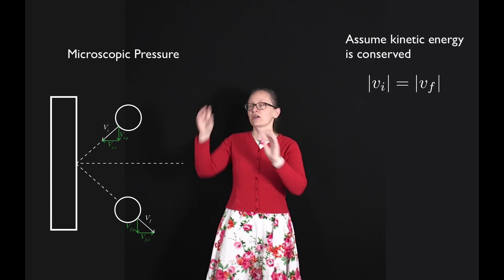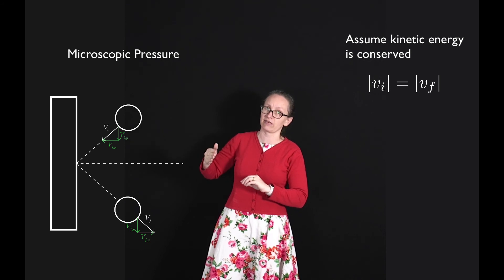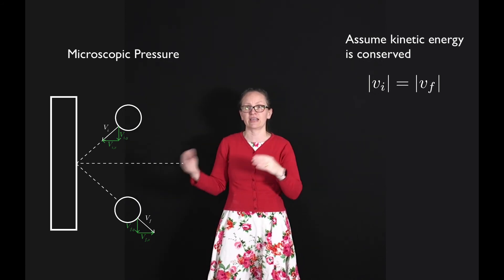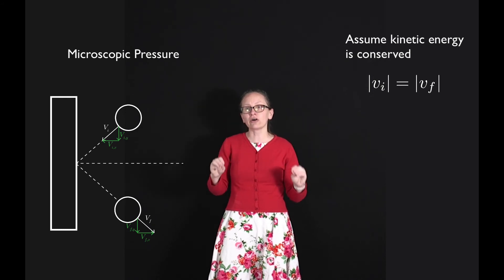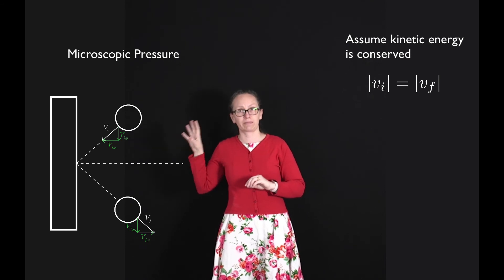Now in this case, the molecule is colliding with the wall and the wall will be exerting a force in the x direction. So we're only going to get a change in the velocity in the x direction. There's not going to be any change in the velocity in the y direction as there's no vertical forces applied.